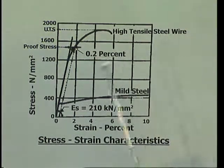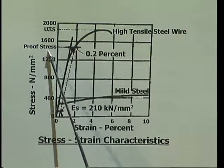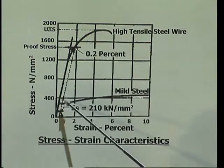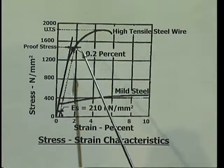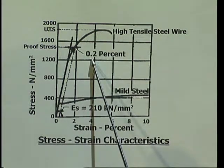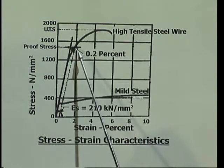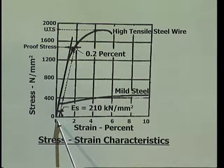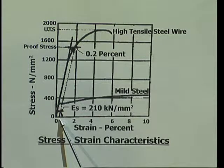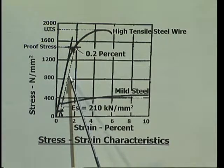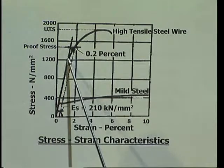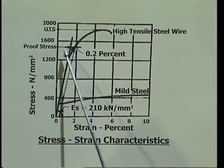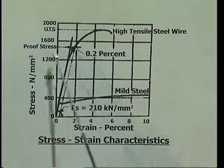Next, we have to see the term called proof stress. In the case of steels like high tensile steel wires which do not have a well-defined yield point, the yield strength is taken equal to 0.2 percent proof stress. The 0.2 percent proof stress is the stress corresponding to a strain of 0.2 percent, that is 0.002. On the strain axis at the point where the strain is 0.002, a straight line is drawn parallel to the initial straight line portion of the diagram. The point where this line meets the stress-strain curve gives the corresponding proof stress.